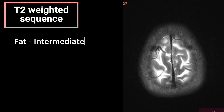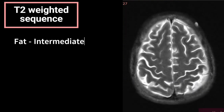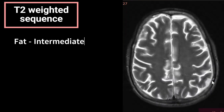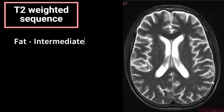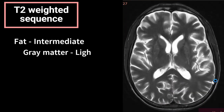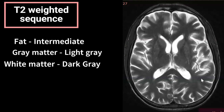Coming to the T2 weighted sequence: fat appears intermediate to bright, so the subcutaneous fat appears intermediate to bright here. Going to lower sections where we can see gray matter and white matter clearly — gray matter appears light gray on T2. We trace the outer cortex appearing light gray, which is opposite to what we saw on the T1 weighted sequence.